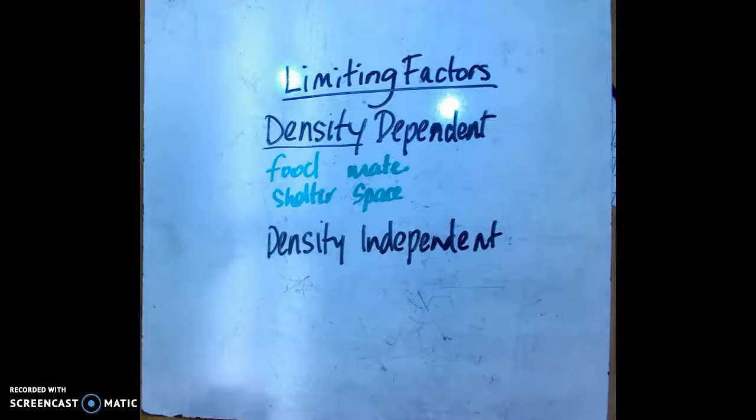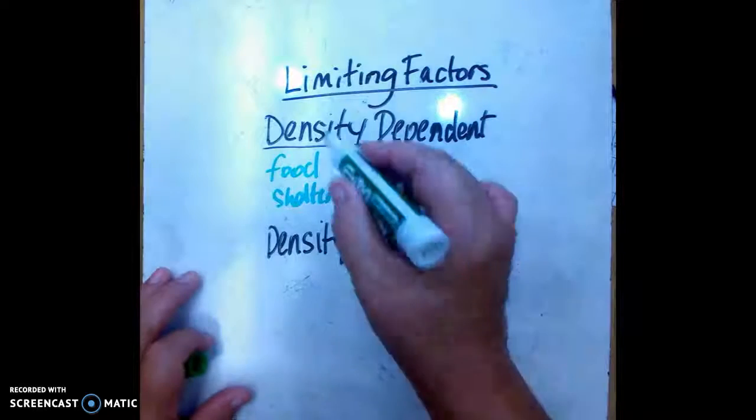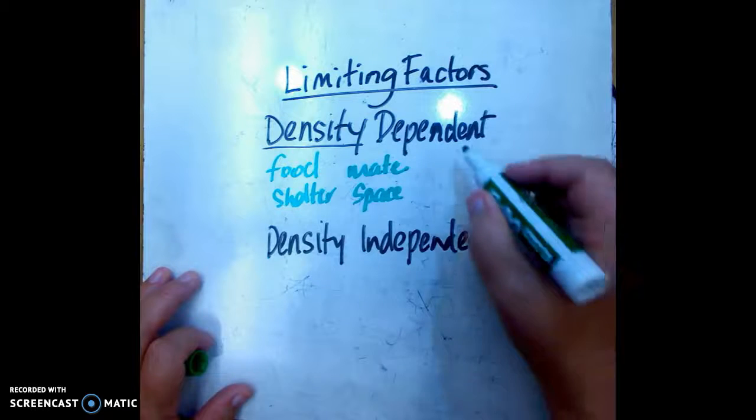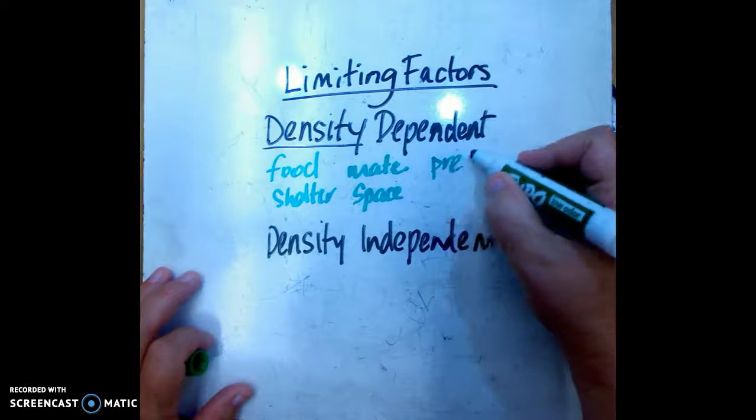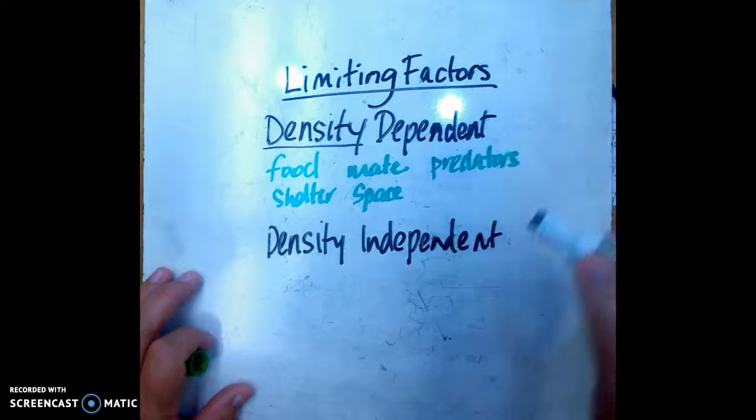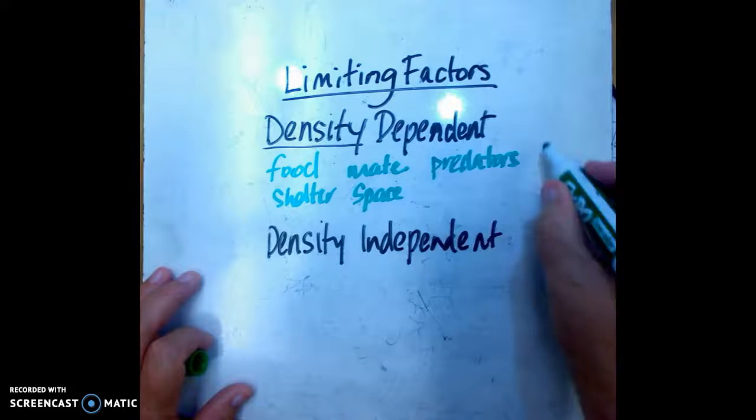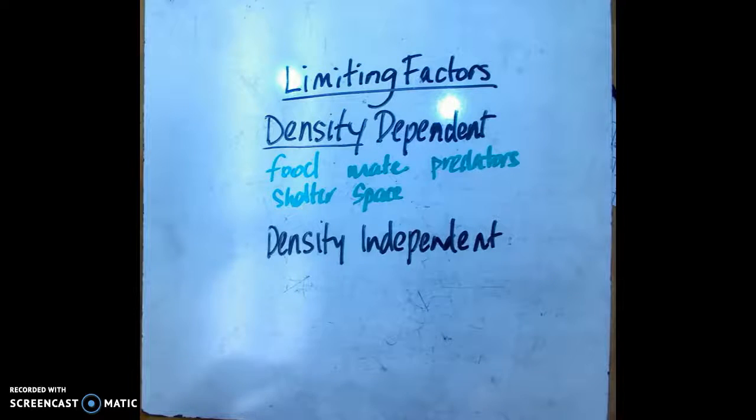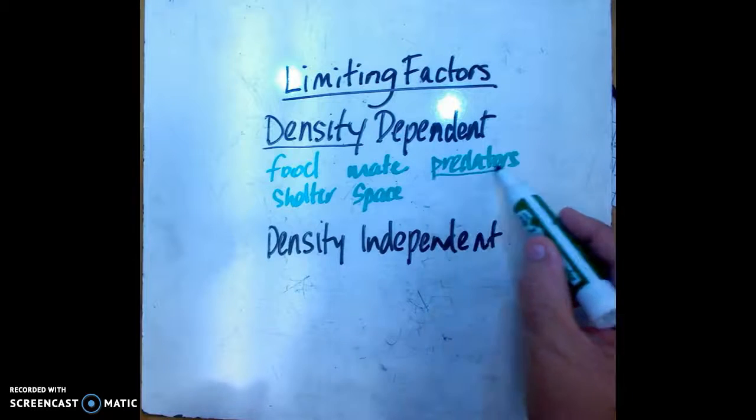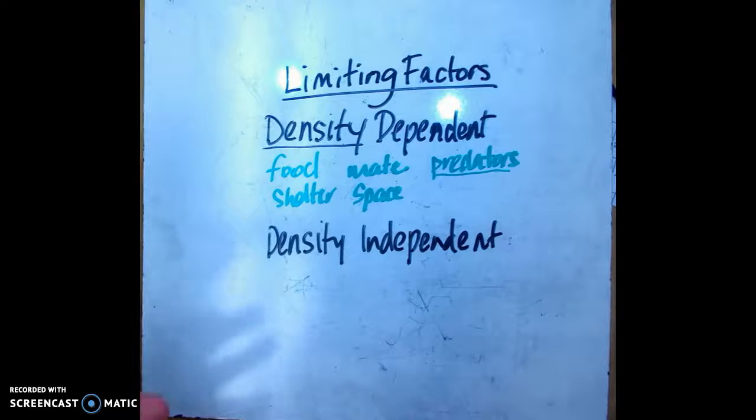There's a couple more that are density dependent - predators. The reason that predators are a density dependent limiting factor is because when there are lots of organisms in an area, the predators will actually go there because it's easier to catch prey if there's lots of them. Think about shark feeding - they follow schools of fish, they don't just randomly go around and look for an individual fish.